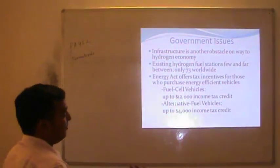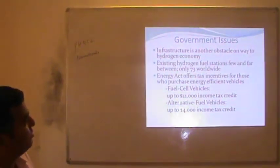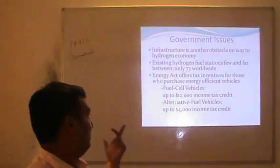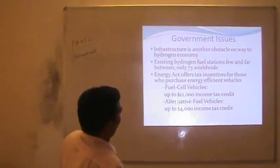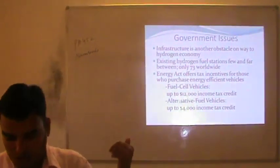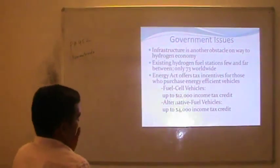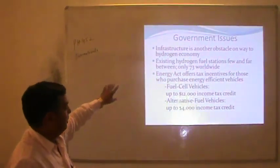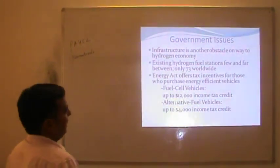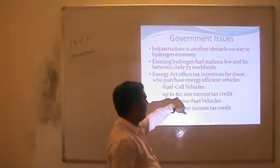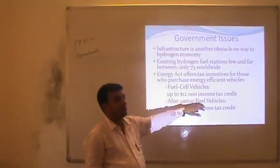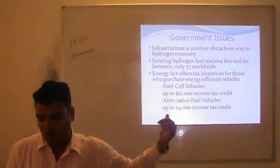There are also government and infrastructure issues. Infrastructure required for hydrogen storage is very high. Existing hydrogen fuel stations are few and far between — only 73 worldwide. For the U.S., there are energy and proper tax incentives for those who purchase energy-efficient vehicles. Fuel cell vehicles cost approximately $12,000 income tax credit spending, whereas alternative fuel vehicles using hydrogen fuel cost only $4,000.